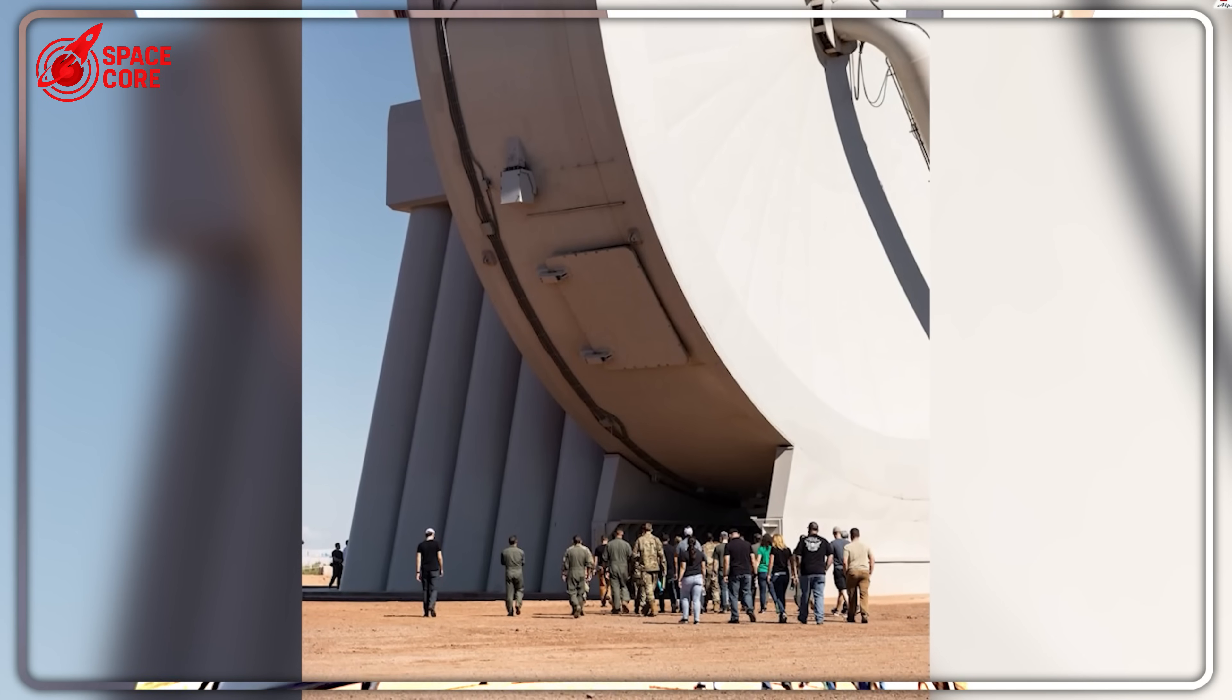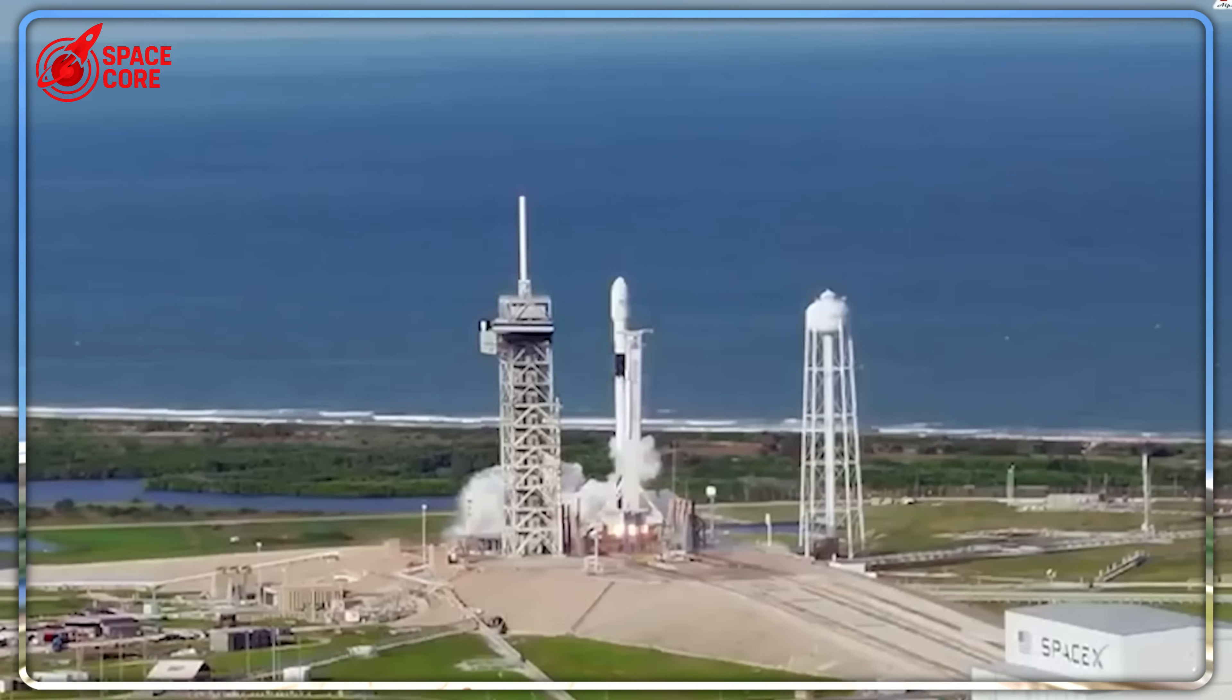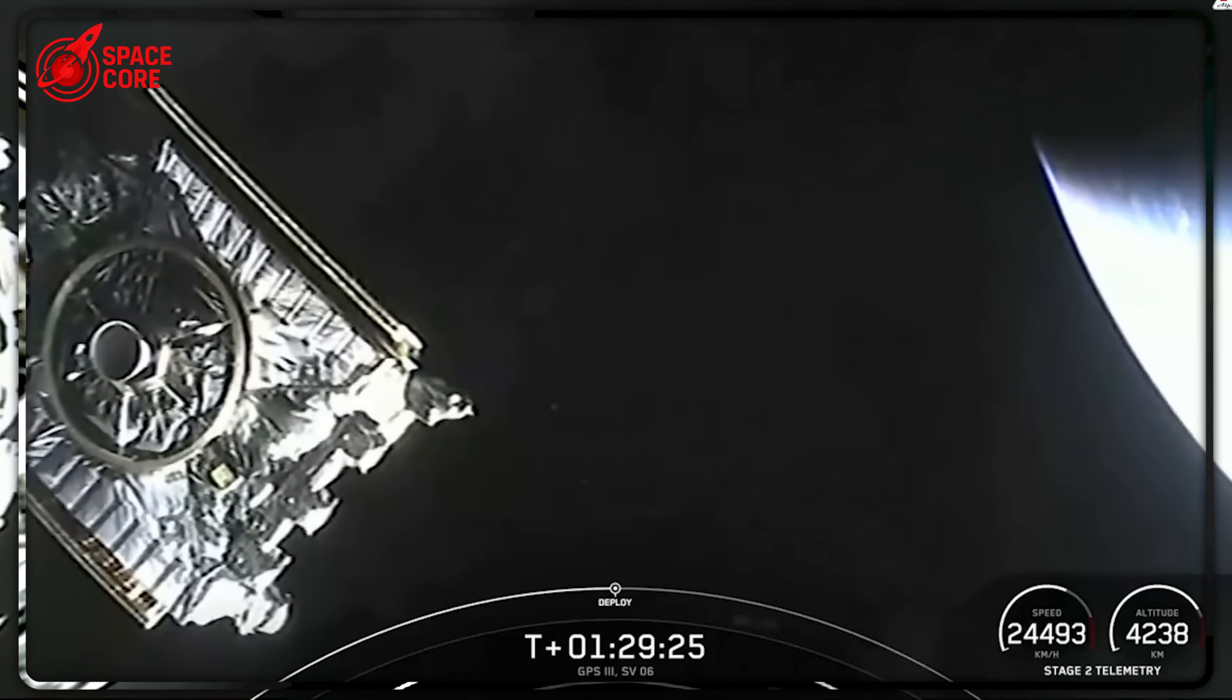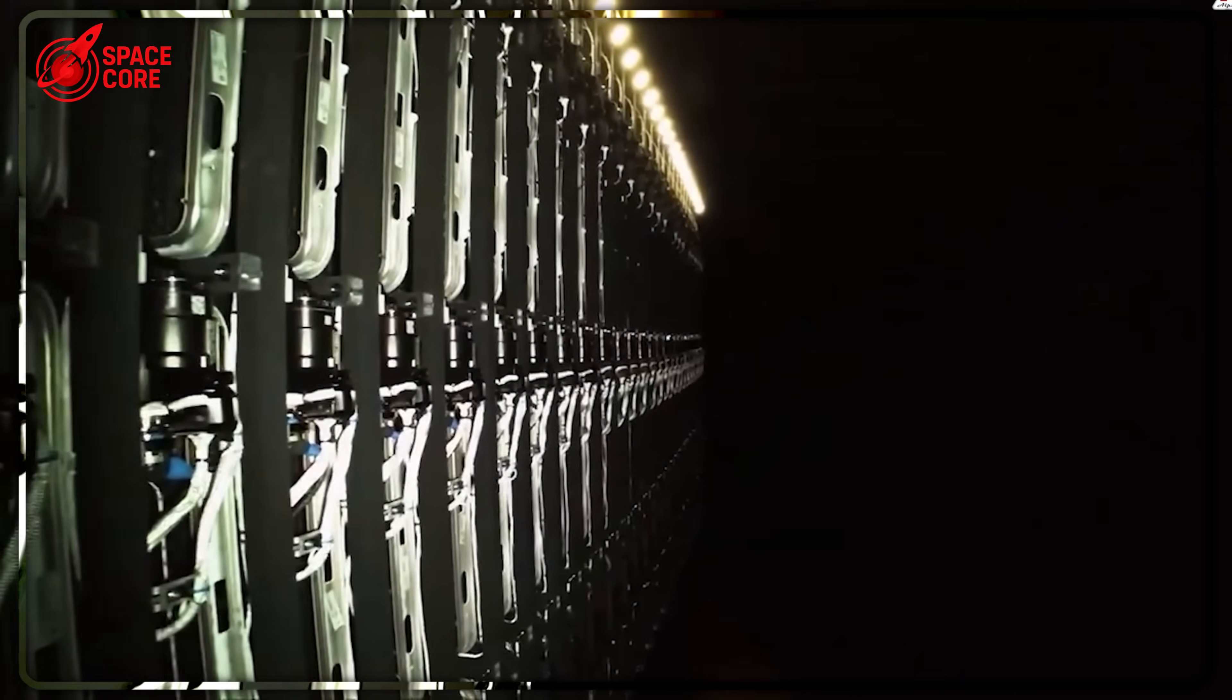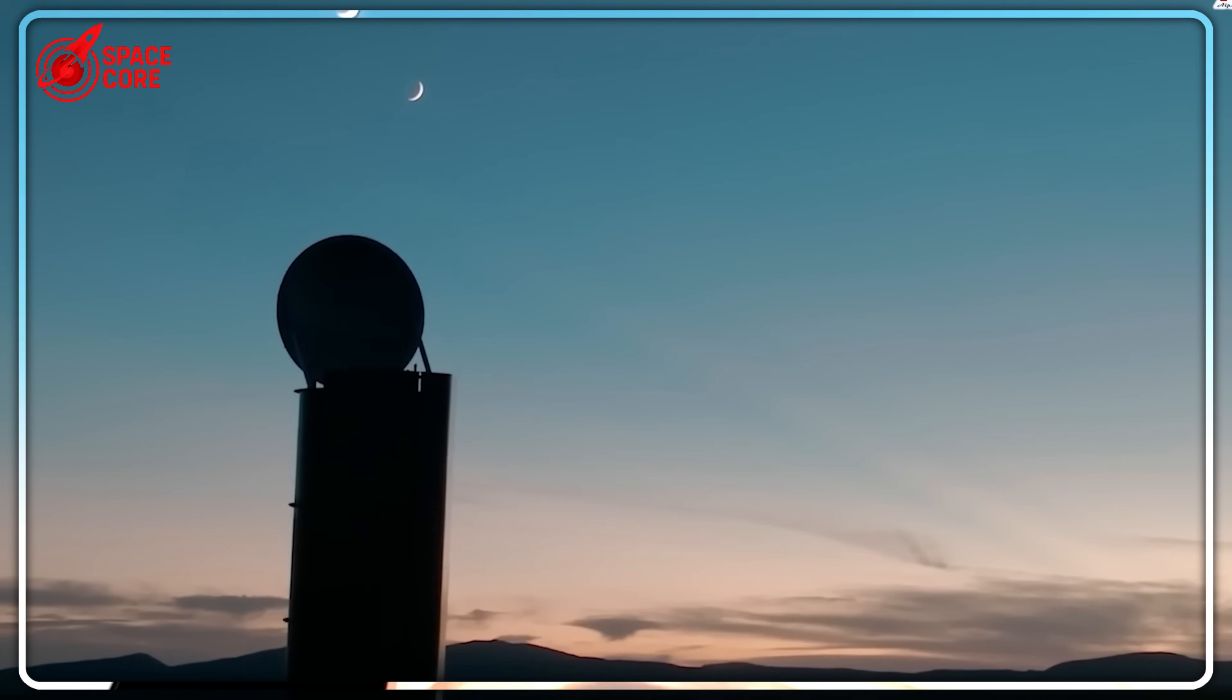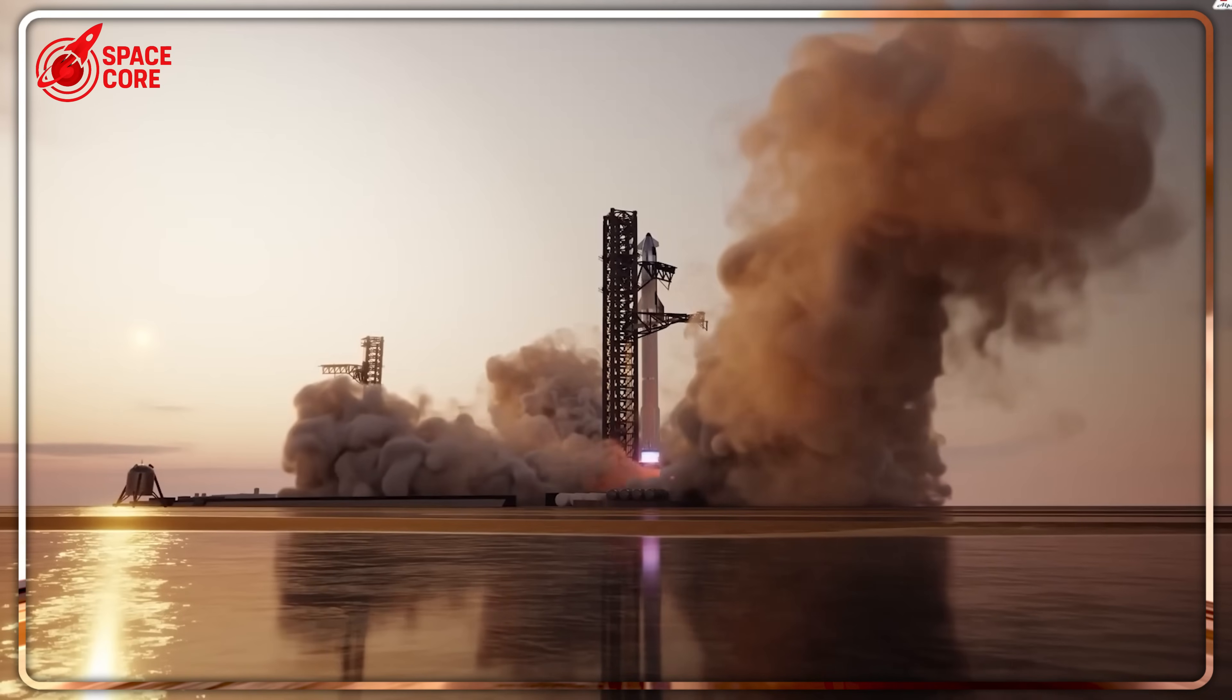The cruel irony? Spin Launch's technical achievements were genuinely impressive. Reaching 5,000 miles per hour in vacuum chambers, surviving 10,000 G-forces, and maintaining NASA partnerships proved the physics worked perfectly. But working physics doesn't guarantee market success when competitors offer overwhelming economic advantages. What really destroyed Spin Launch's $71 million dream? Market timing. While they perfected revolutionary technology, SpaceX mastered the art of making conventional rockets so cheap and reliable that alternatives became commercially worthless.